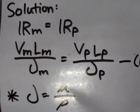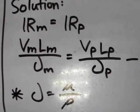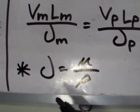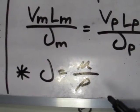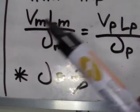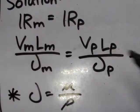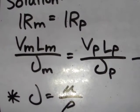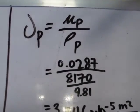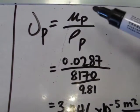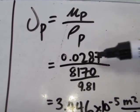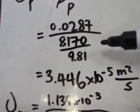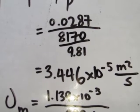We can say that the Reynolds number of the model equals the Reynolds number of the prototype. It is noted that nu, or the kinematic viscosity, is equal to the absolute viscosity over the density — this is another form to express Reynolds number. To get the velocity of the model, we first solve nu_m and nu_p. The kinematic viscosity of the prototype is mu over density, where mu is 0.0287 and density is gamma over gravity, with gravity at 9.81. We compute and get the answer.